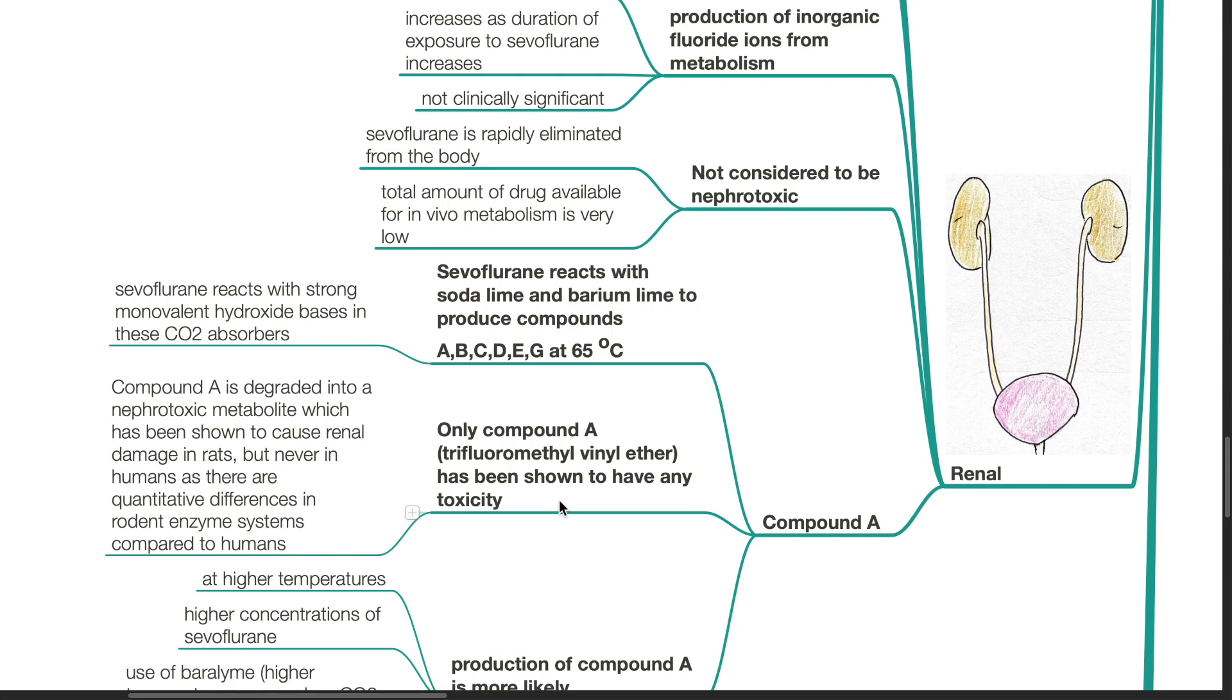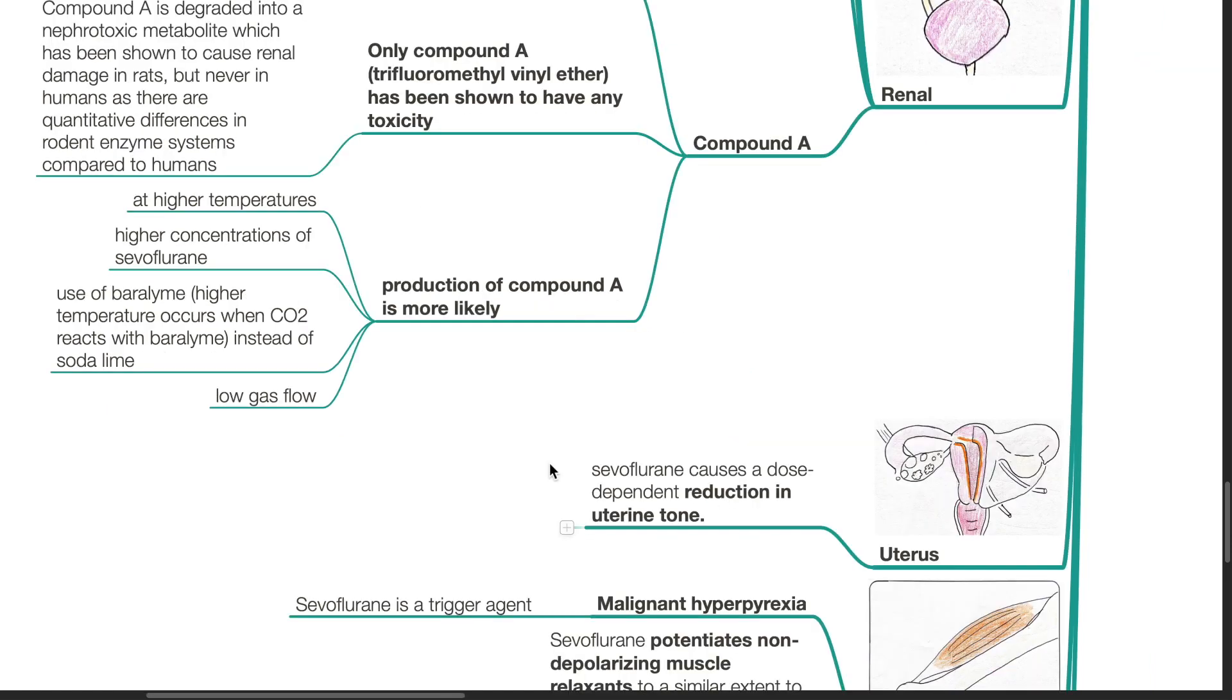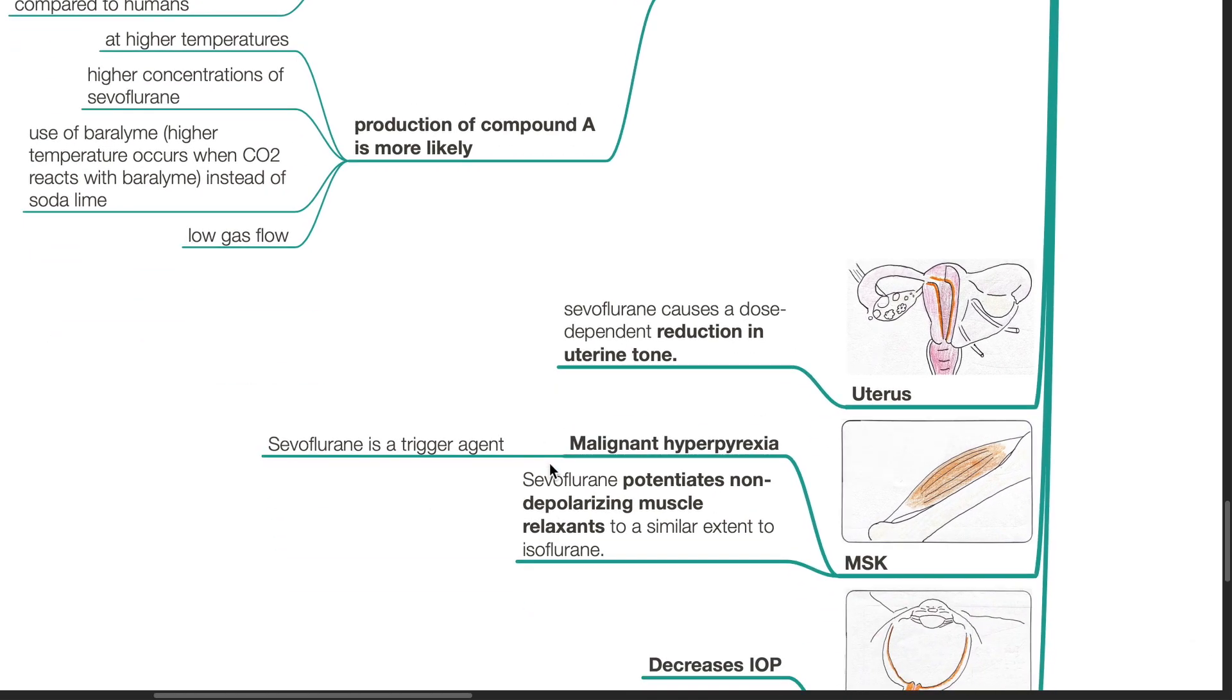Compound A is degraded into a nephrotoxic metabolite which has been shown to cause renal damage in rats but never in humans as there are quantitative differences in rodent enzyme systems compared to humans. Production of compound A is more likely at higher temperatures, higher concentrations of Sevoflurane, use of baralime, and low gas flow. Sevoflurane causes a dose-dependent reduction in uterine tone. Sevoflurane is a trigger for malignant hyperpyrexia. Sevoflurane potentiates non-depolarizing muscle relaxants to a similar extent to isoflurane.